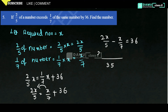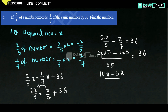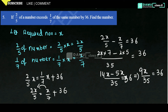So 14x minus 5x by 35 equals 36, that gives 9x by 35 equals 36. Then 9x equals 36 into 35, so x equals 36 into 35 by 9. Simplifying, 36 divided by 9 is 4, so x equals 4 into 35, which is 140.